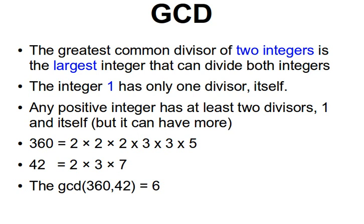Let's go straight to the slides. The GCD — the greatest common divisor — of two integers is the largest integer that can divide both integers. You're certainly familiar with integer division; I explained that in one of my videos, and I will leave the link underneath this video. The integer 1 has only one divisor: itself. Any positive integer will have at least two divisors: 1 and itself.